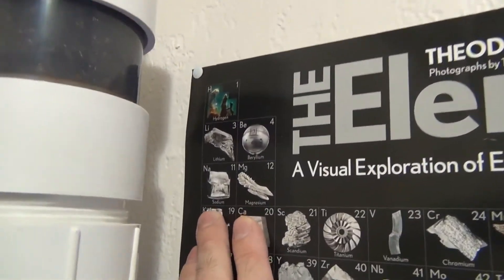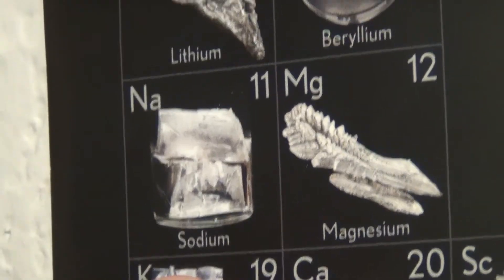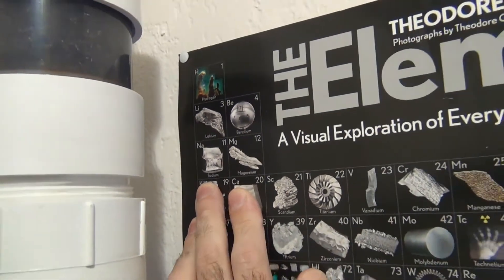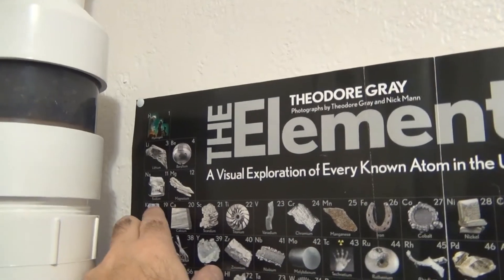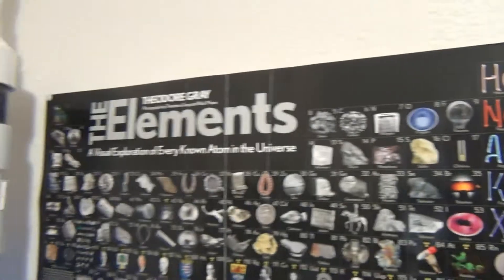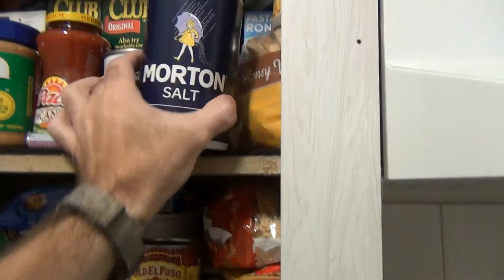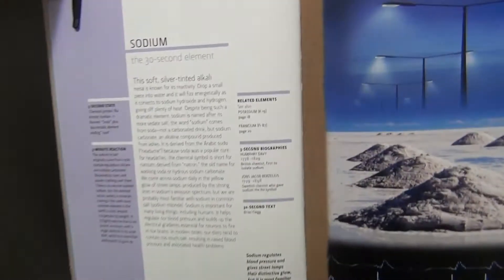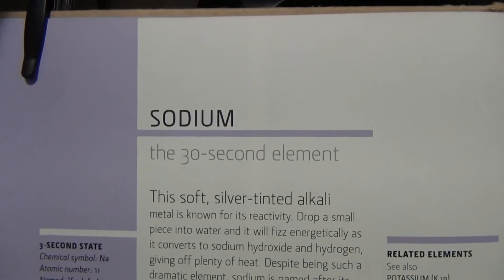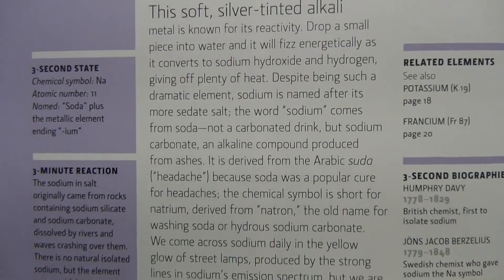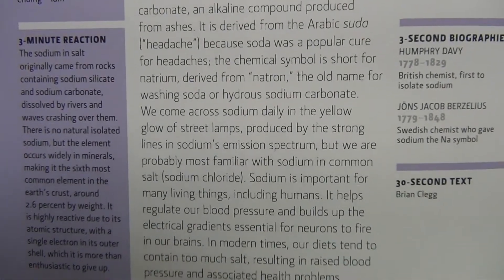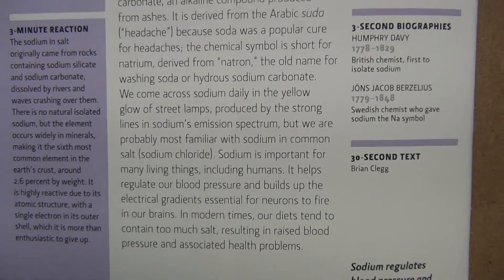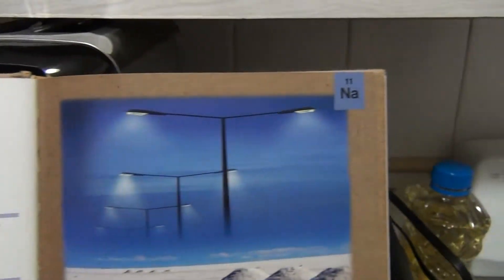Sodium on the table of elements is number 11, and it's a highly reactive metal. When you throw it in water it creates hydrogen. The salt you see on the cooking table at home is sodium chloride — two elements, sodium and chlorine — that's your table salt. That's very different from the sodium carbonate I use as an electrolyte. Make sure you understand the difference between the two. The old name for washing soda was natrium — sodium carbonate rather than salt.